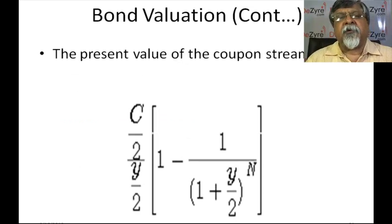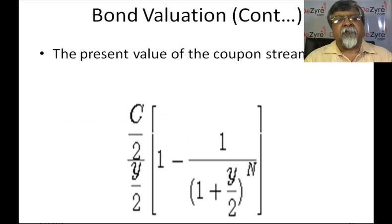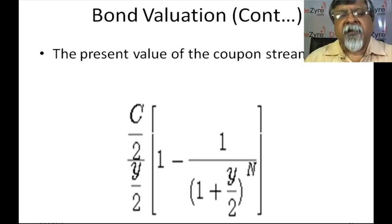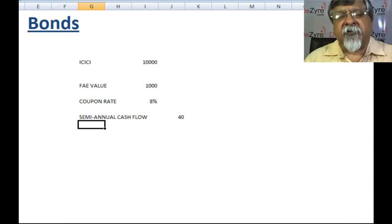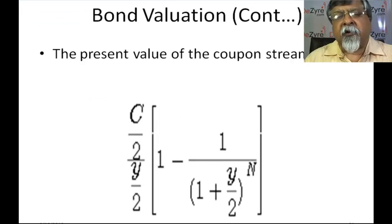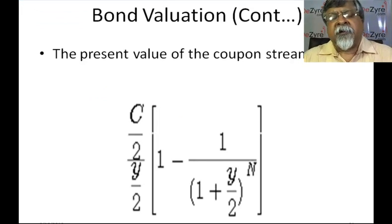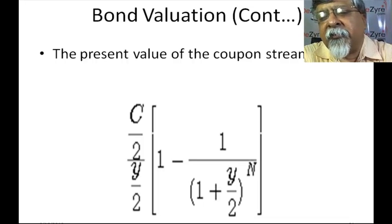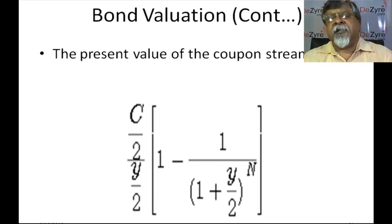What is the present value of the coupon stream? The present value of the coupon stream is the cash flow, which is C/2, divided by the discount rate, which is Y/2, multiplied by [1 minus 1/(1 + Y/2)^N], where N is the number of cash flows or periods.